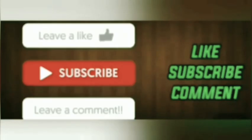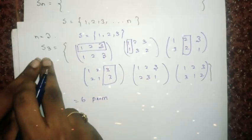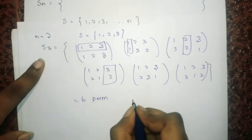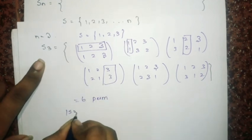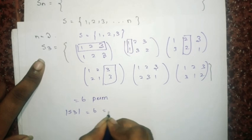If you have some doubt in other topics, please leave it in the comment box so I can make it clear in my next video. You can see the order of S_3 is 6, which is equal to 3 factorial.